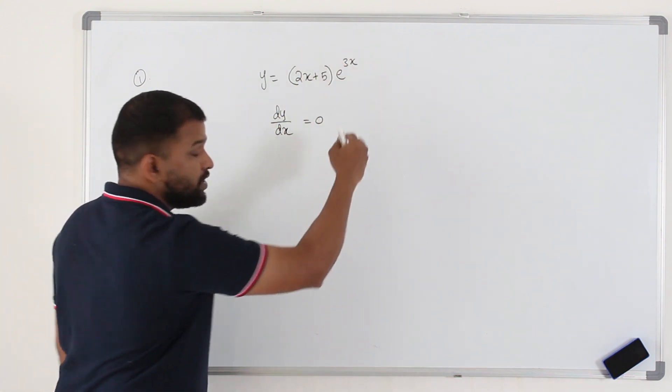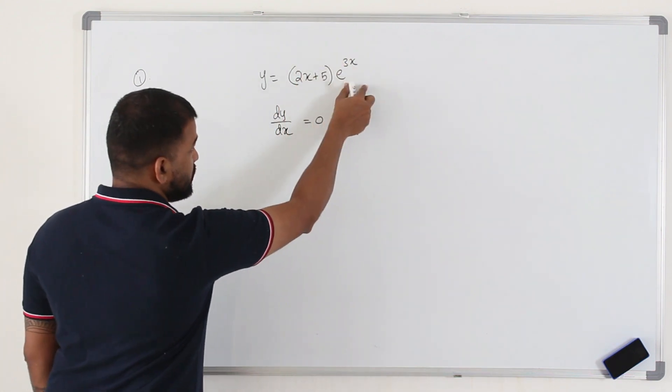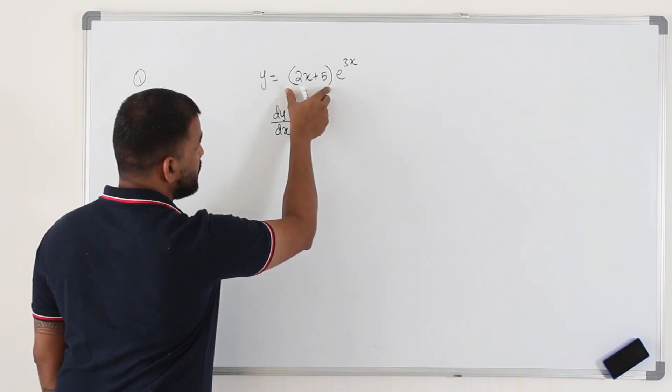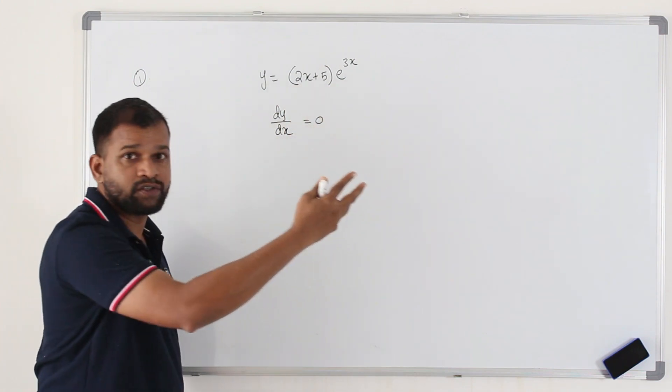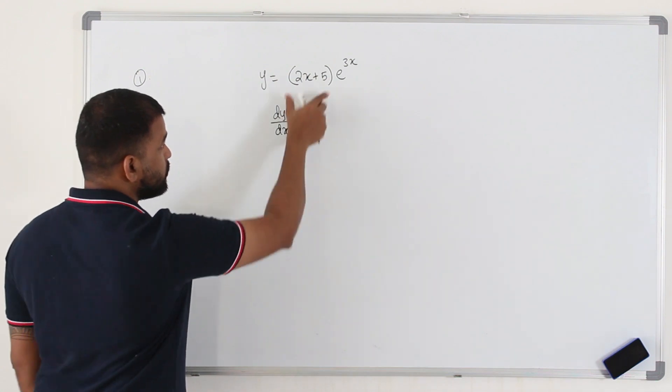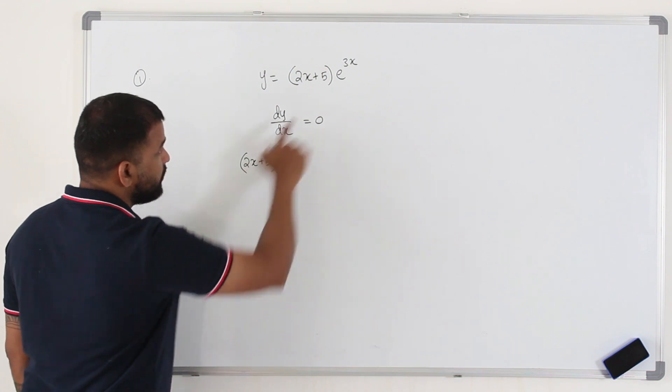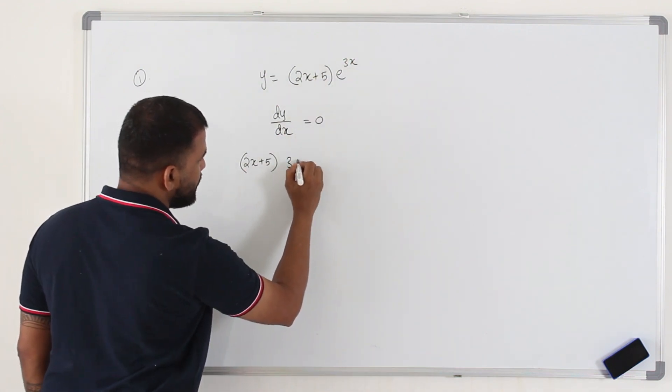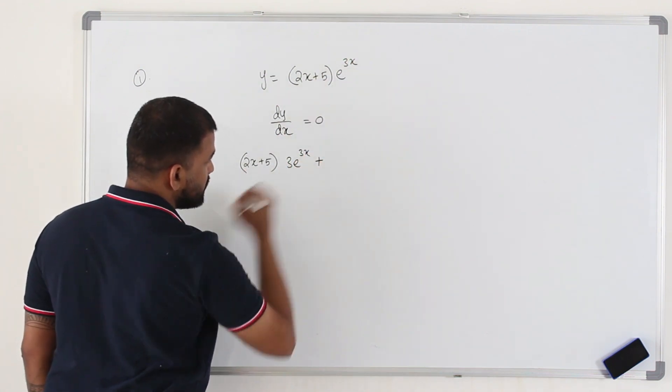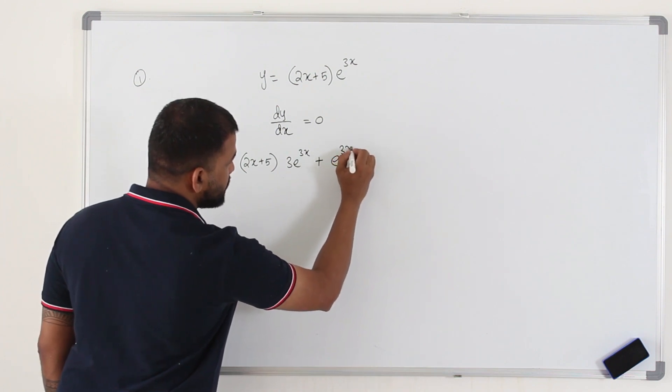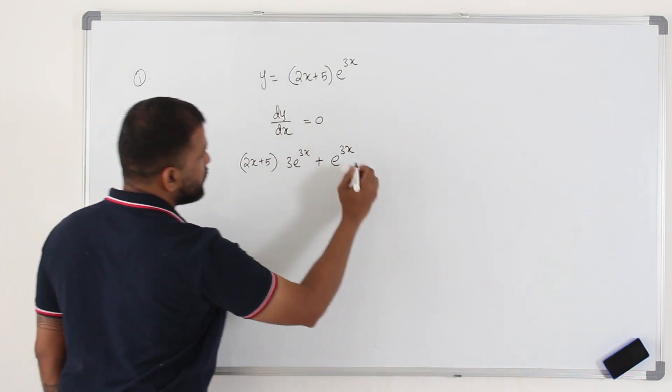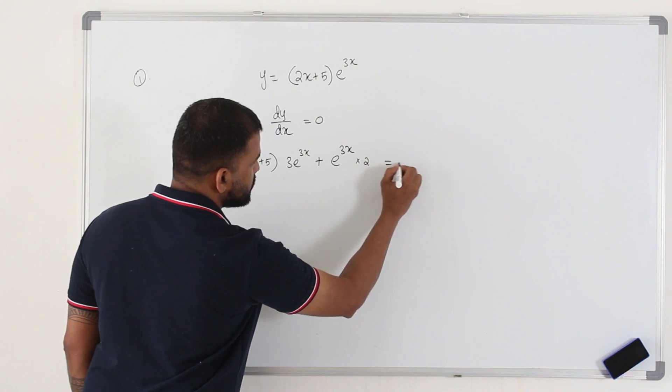In order to differentiate this, you have two functions here: one algebraic function, one exponential function. So you need to apply product rule. How to apply the product rule: you keep the first function as this, differentiate the second one, 3e^(3x), plus keep the second function as it is, differentiate the first one, you will get 2, put it as equal to 0.